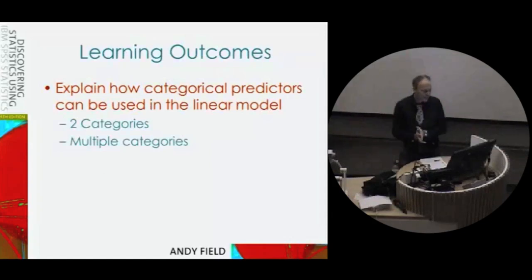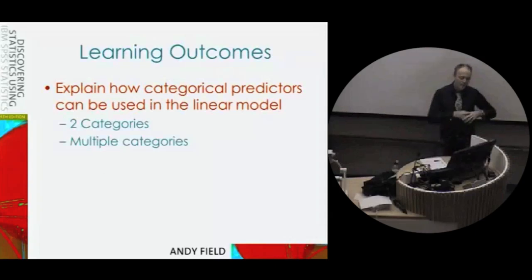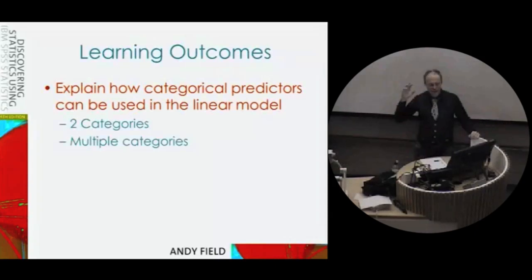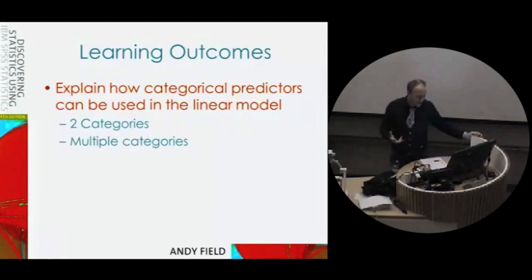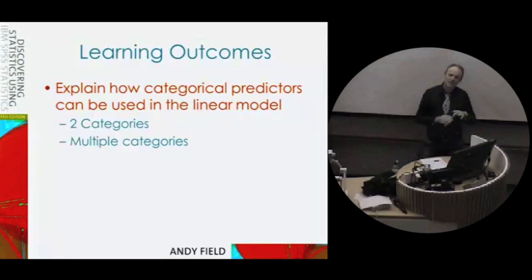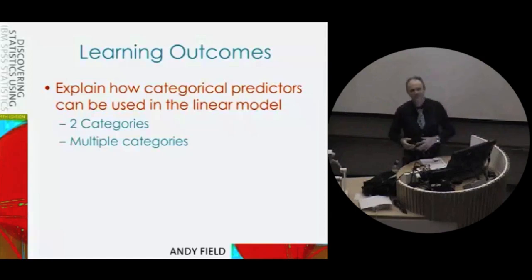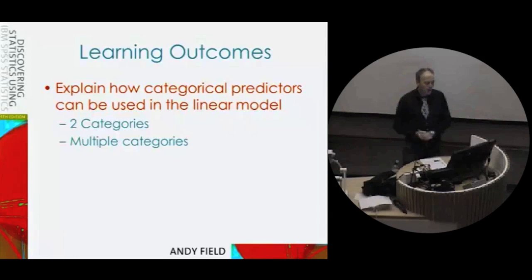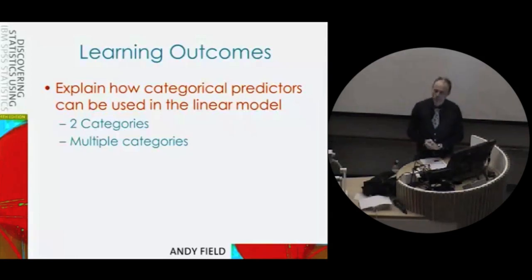What are our learning outcomes for today? We've looked at the linear model with one predictor and with lots of predictors. But so far, all the predictors we've had have been continuous variables — things like advertising budget, on a nice continuous scale. We haven't at all looked at what happens if you want to put categorical predictors into a linear model.